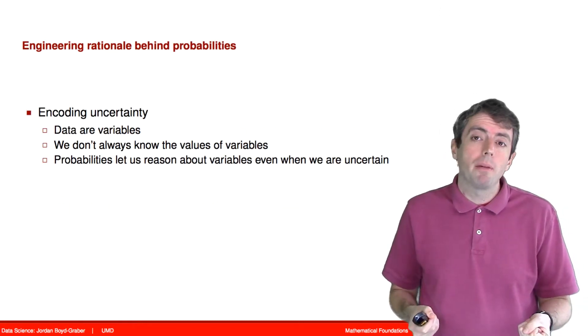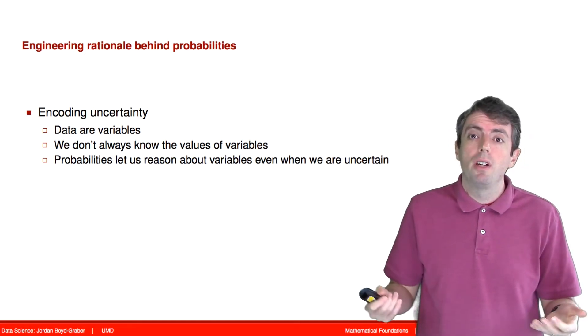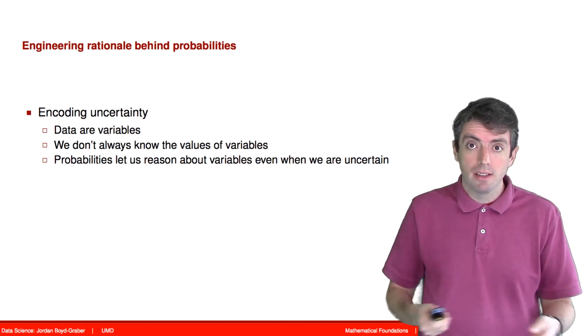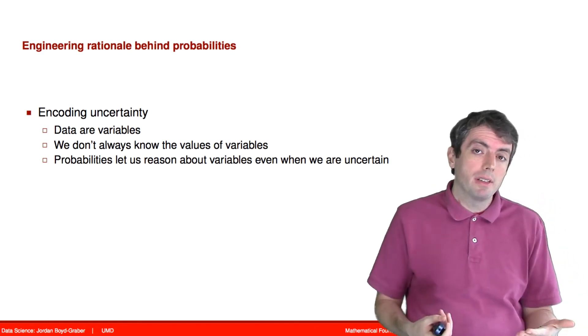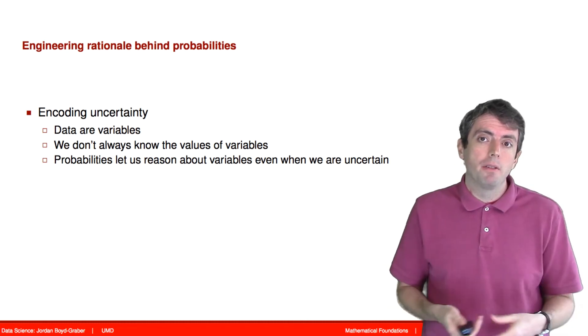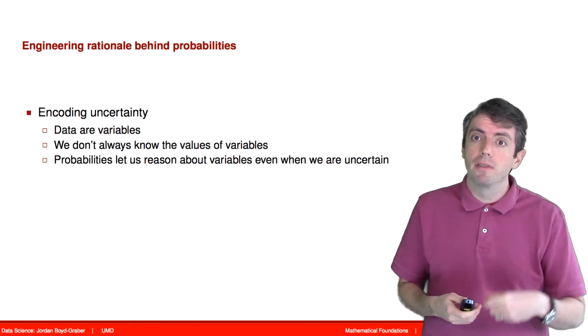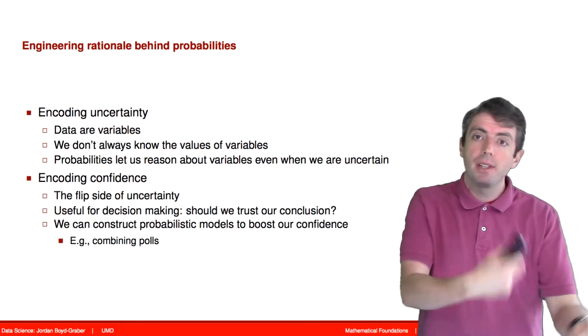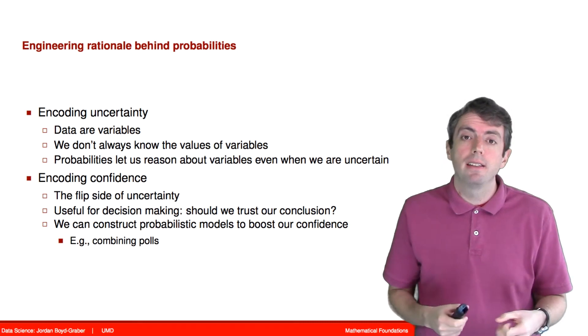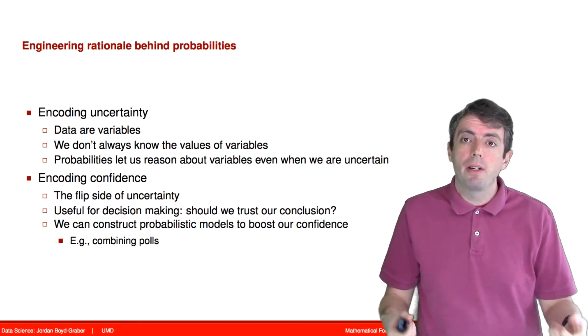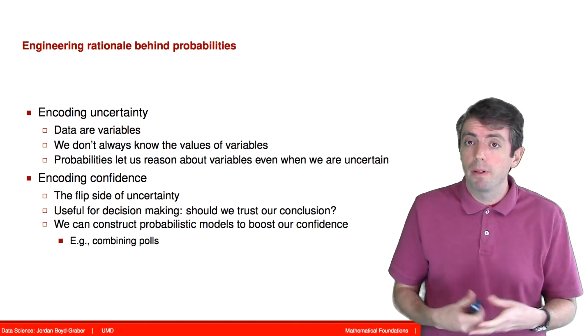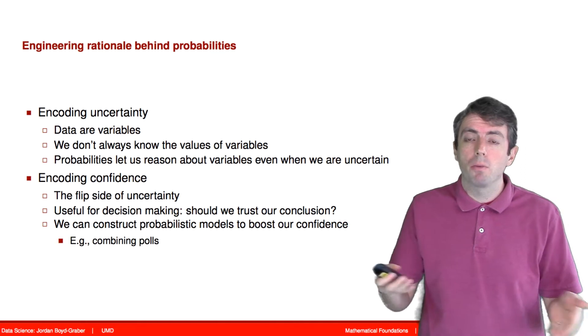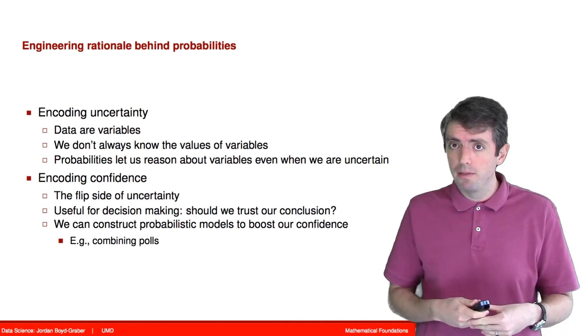The reason that we're talking about probabilities is that the data we see in the world are variables, and these variables are uncertain. We don't know with 100% certainty what the value of a particular data we observe in the world is, and we use probabilities to encode this uncertainty. The flip side of uncertainty is confidence, and we use probabilities to encode how confident we are in predictions we make about what's going to happen in the future, or make predictions about what the value of some unknown variable is.